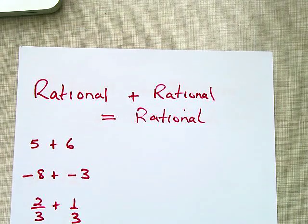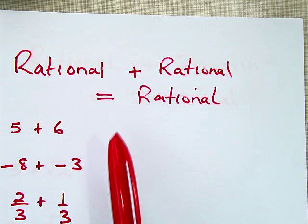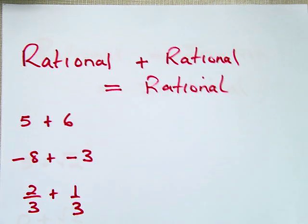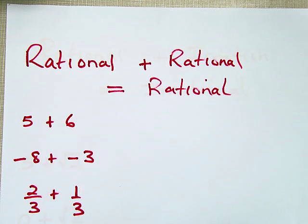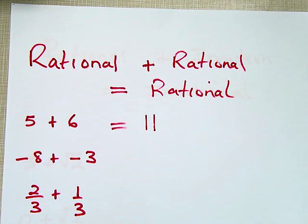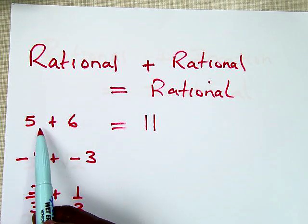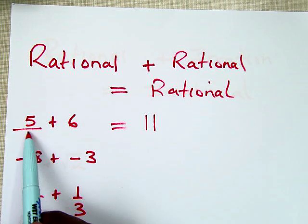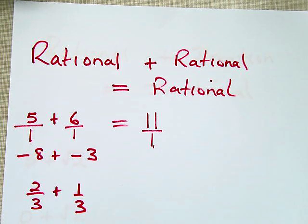The easiest one is rational plus rational. Rational plus rational is always equal to rational. Here's a rational number, 5, plus another rational number, 6 — that gives us 11, which is also rational. Bear in mind that they are rational because they are natural numbers, integers, et cetera, or they can be written as fractions with integer values.